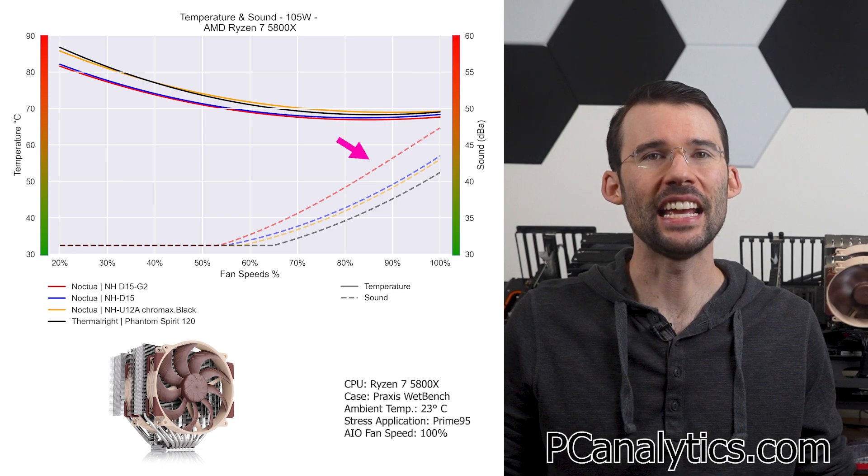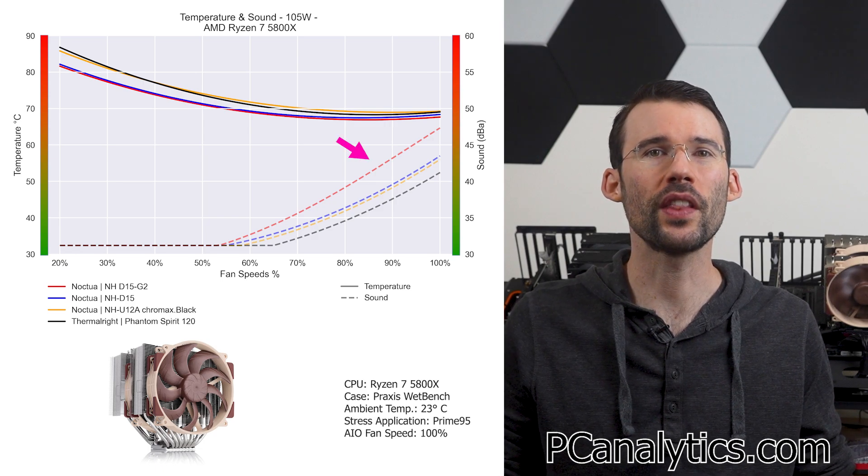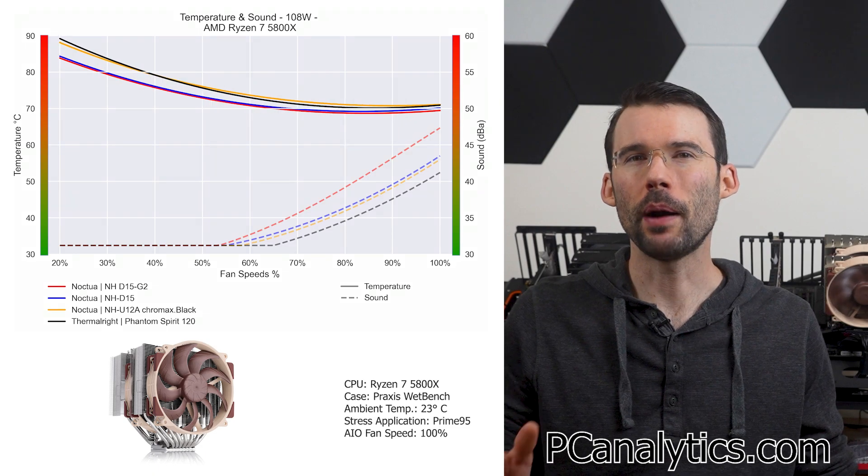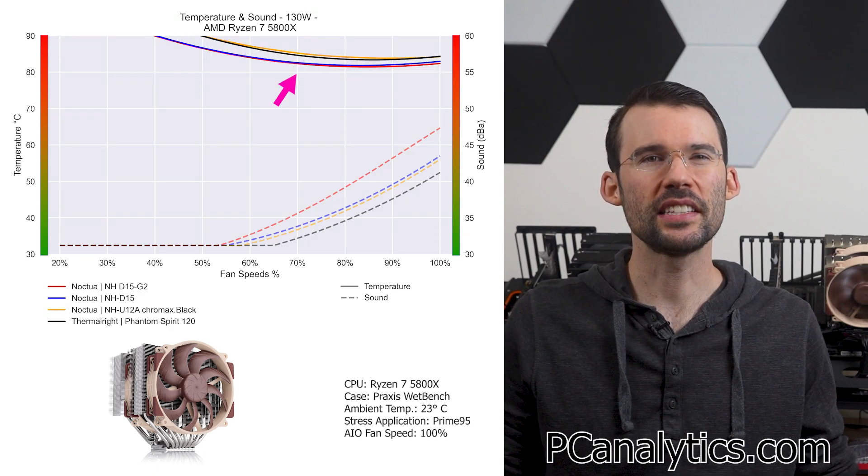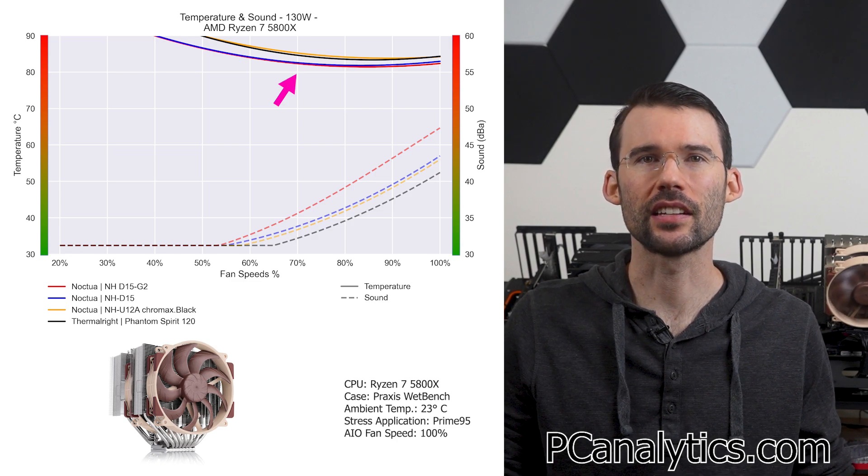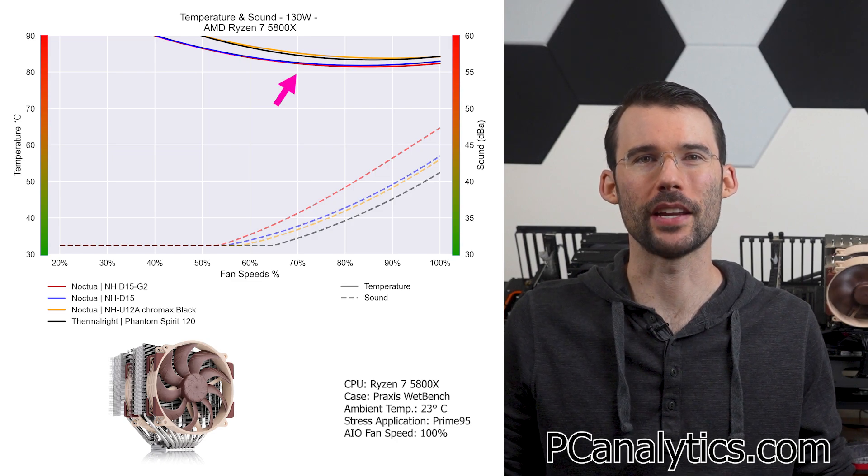However, in regards to noise levels, the NH-D15G2 produces one of the highest noise levels among the coolers compared at the higher RPMs. When we pump up the heat to 130 watts, we can see that this trend continues among the coolers shown. With the NH-D15G2 being one of the loudest, let's see how it does on a noise-normalized basis.